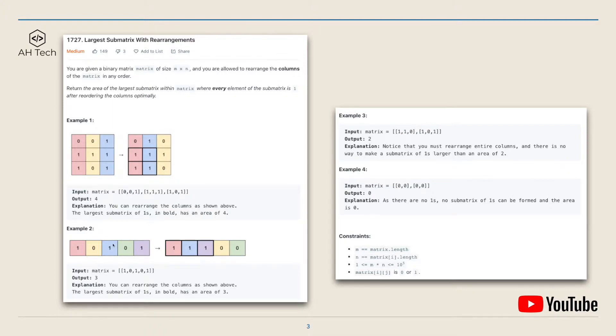Then we are able to get the largest sum matrix of 1 which has the area of 4. And example 2, we can rearrange column 3 and column 5 so that the first three columns can form the largest sum matrix of 1 which has an area of 3.